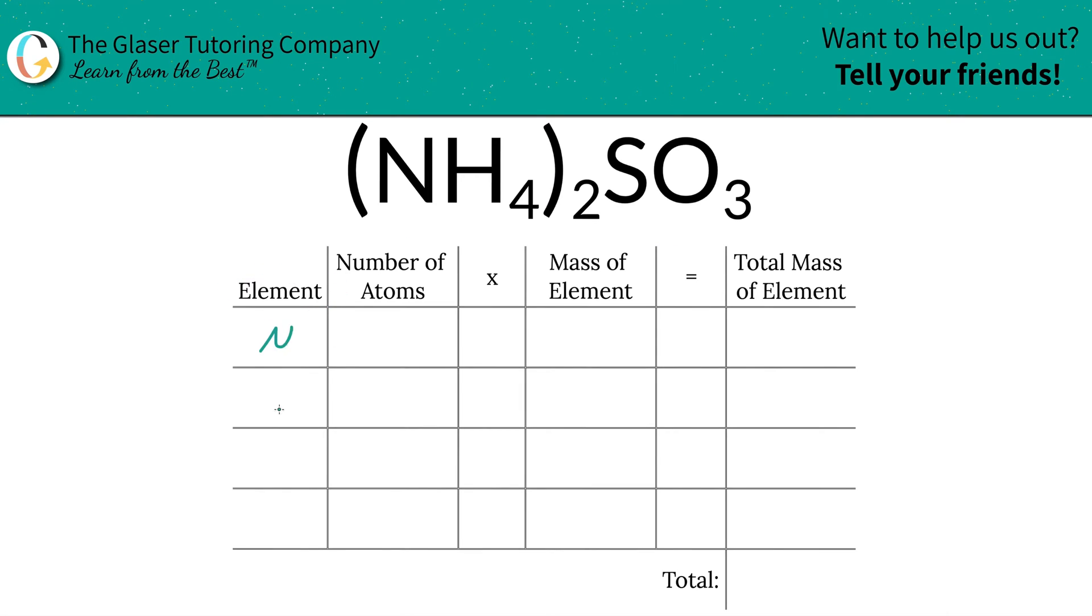So the first step of the process is we're going to write down the elements we have in the compound: nitrogen, hydrogen, sulfur, and oxygen.